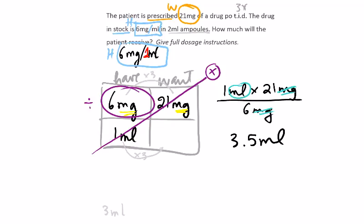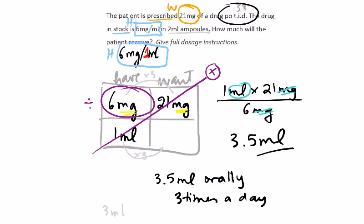Read the question again. How much will the patient receive? 3.5 mils is our answer. Give full dosage instructions. We have to say we're going to give 3.5 mils orally, or by mouth, three times a day. We need to actually be explicit in writing this, because what we are doing is translating what we had here on the top, three times a day.